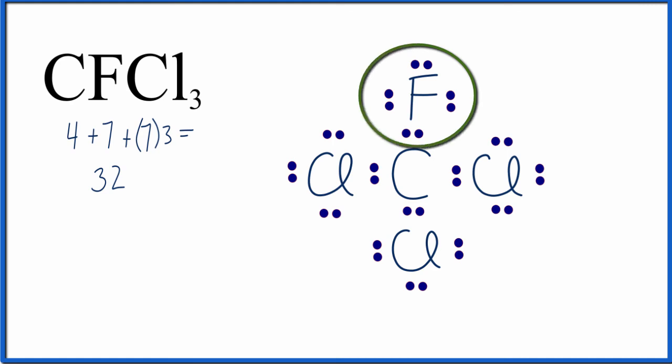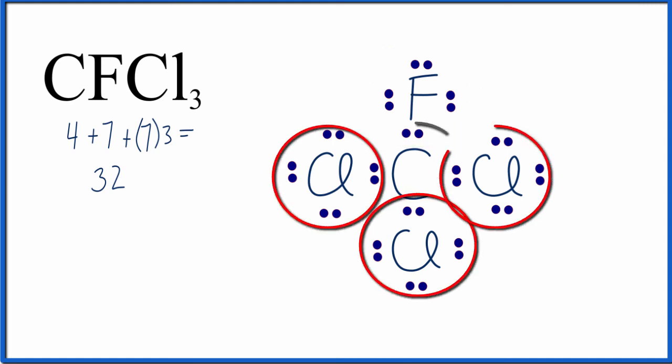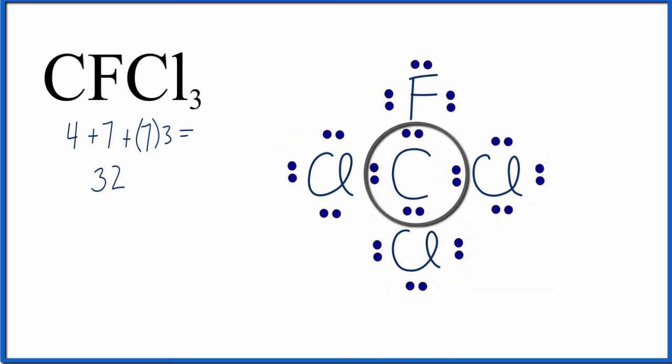Fluorine has 8 valence electrons, each of the chlorines has 8 valence electrons, and then that carbon in the center also has 8 valence electrons, so they're all obeying the octet rule.